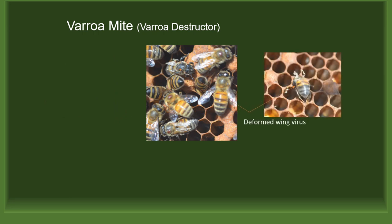Originally found on the eastern honeybee of Asia, the mites and the bees enjoyed a host-parasite relationship. However, when the mites transferred to the western honeybee, they did not have a defense to the parasite, resulting in the die-off of the majority of feral hives in the U.S. While feeding on the honeybees, the varroa mite infects their hosts, transmitting viruses. One of the most common viruses is deformed wing virus, as seen in these pictures.